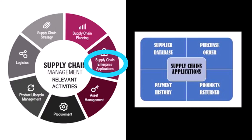Yang pertama, supplier database. Fitur ini menyimpan semua database supplier yang dibutuhkan oleh perusahaan, seperti informasi barang yang disediakan, alamat, dan PIC (Personal Incharge) yang berhubungan langsung dengan perusahaan kita. Kemudian yang kedua, purchase order. Pada fitur ini terdapat list informasi bahan baku yang diperlukan oleh perusahaan dan akan dikirimkan oleh supplier. Bahan baku tersebut akan didata seperti jenis dan jumlah yang dibutuhkan serta harga yang telah ditetapkan.